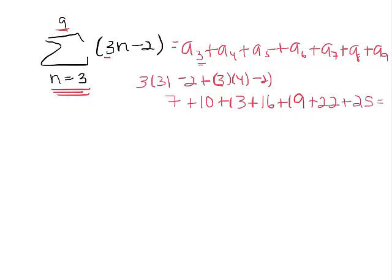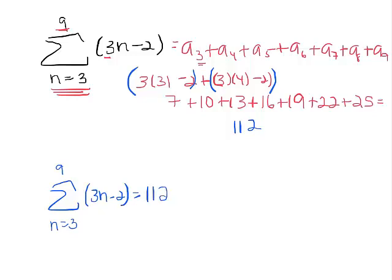So now if I add all of those together, I get 112. So the summation here from n equals 3 to 9 of 3n minus 2, that equals 112.